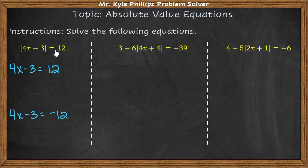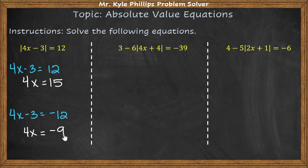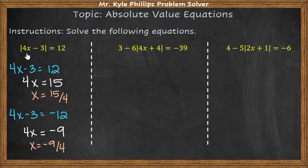Absolute value represents the distance from zero, so this is how we account for both solutions. Adding 3 to both sides: 4x equals 15 on one side, and 4x equals negative 9 on the other. Dividing each side by 4 gives x equals 15 over 4, and x equals negative 9 over 4. These are the two values of x that satisfy this equation.